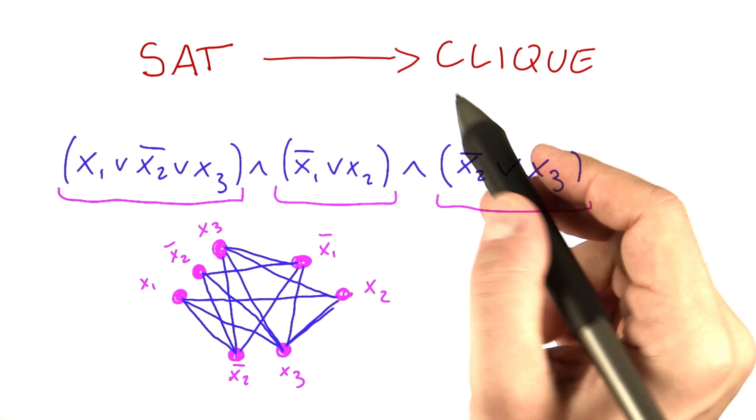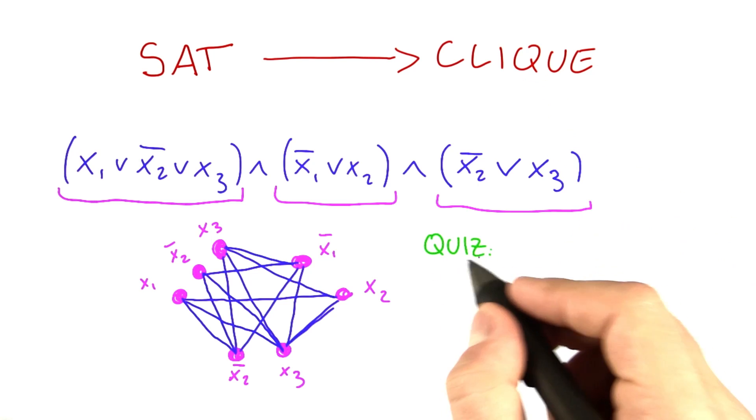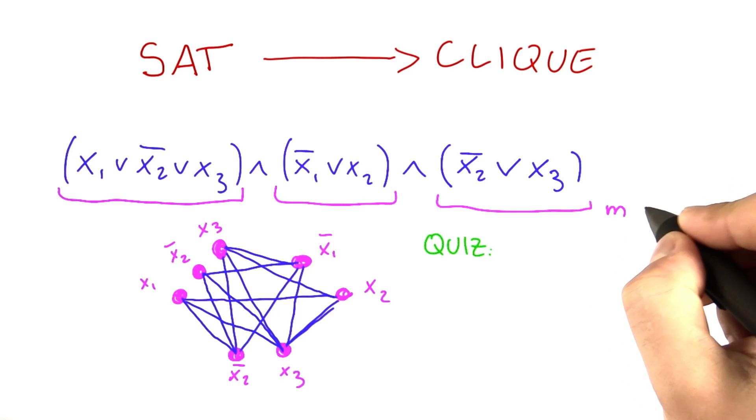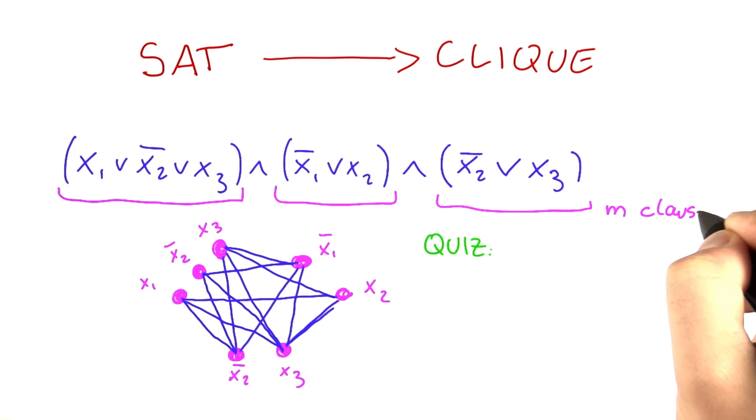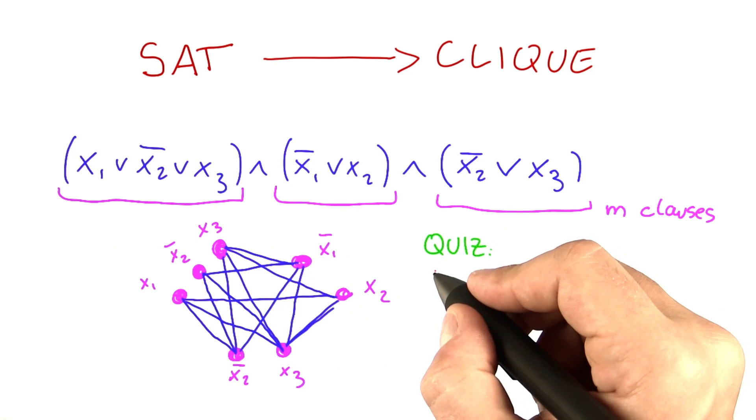But now I still need to show you what satisfiability has to do with clique. We're actually going to do this as a little quiz. So let's say that the Boolean formula has m clauses. So in this case, m is 3, but you can consider the more general case here.